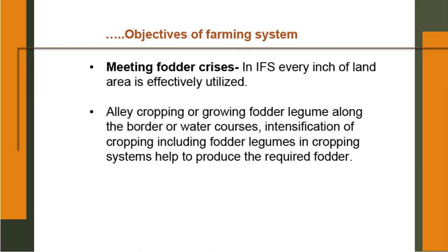Meeting fodder crisis: in integrated farming system every inch of land area is effectively utilized. Alley cropping or growing fodder legumes along the border of water courses, intensification of cropping including fodder legumes in cropping systems, help to produce the required fodder. Fodder can be produced right at the farm.